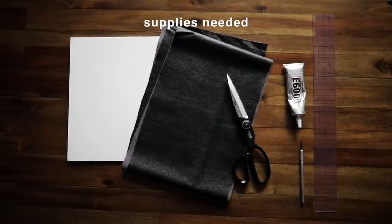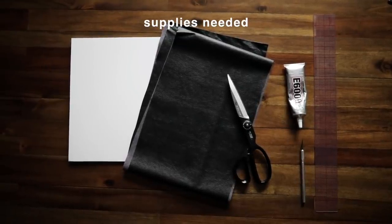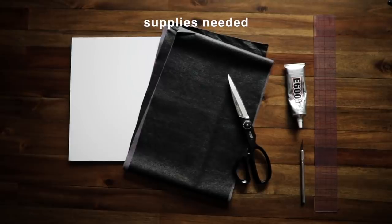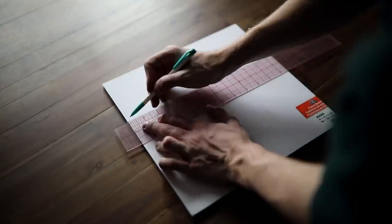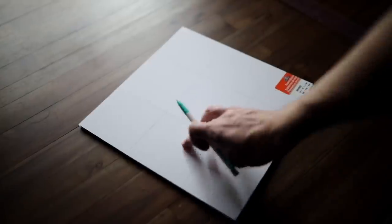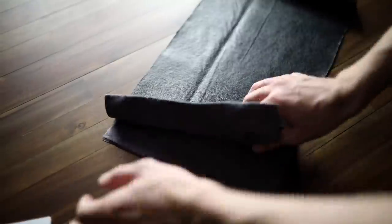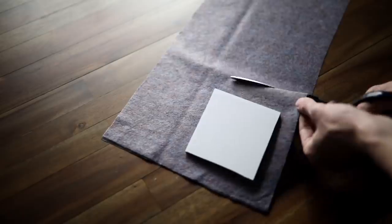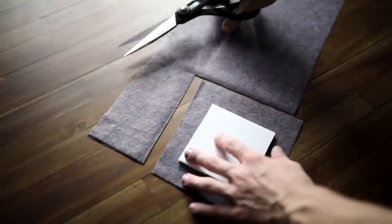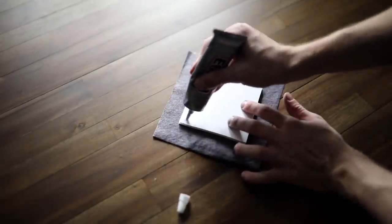Would you believe me if I told you these coasters cost under two dollars to make? All you need is foam core, some pleather fabric, scissors, an exacto knife, ruler, and E6000 adhesive. Start by taking your foam board—this is like that project board you use for science projects—and cut them into four by four inch squares.